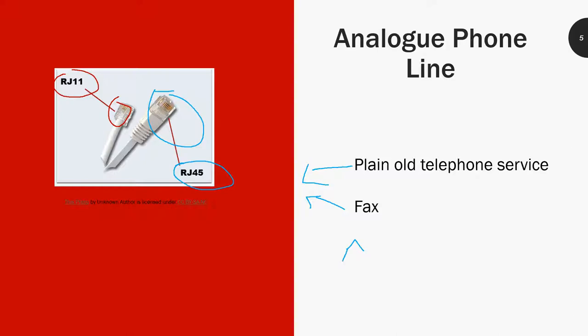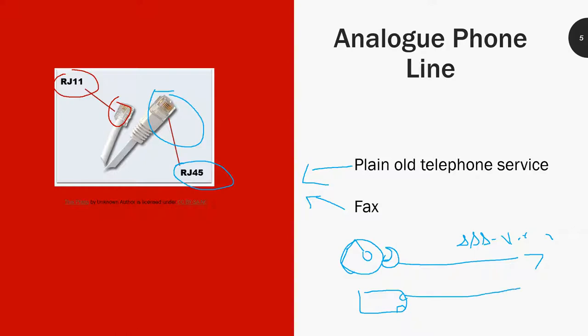There are other things that use phone lines, like alarm systems. Alarms use a dialer that dials a number out over the phone line. Some battery systems also use phone lines to dial out a low-battery alert. But those are very specialized and rare use cases, well outside the scope of this overview.